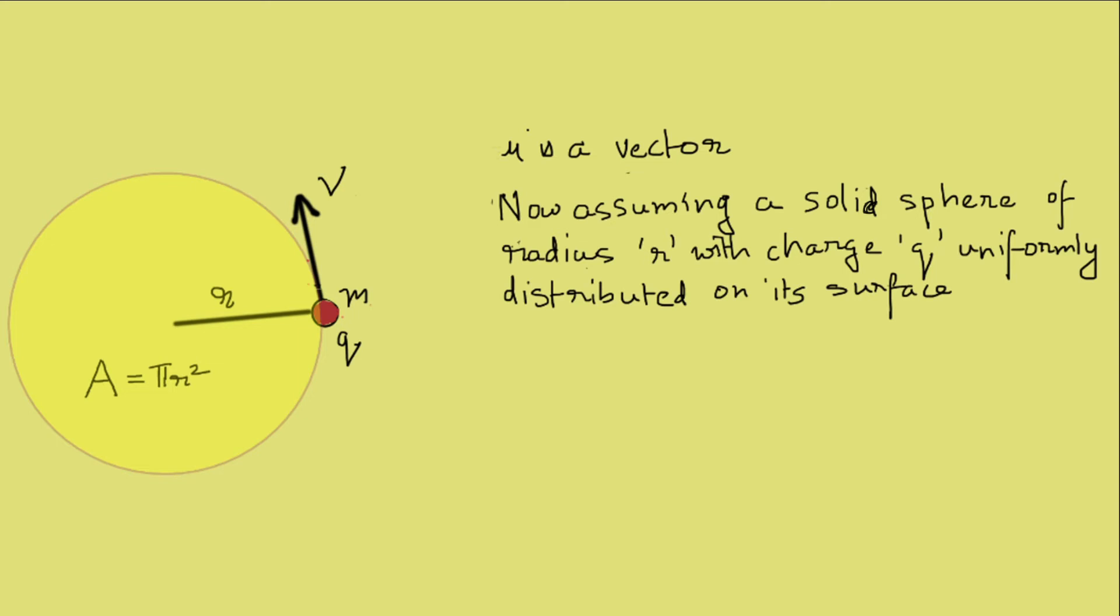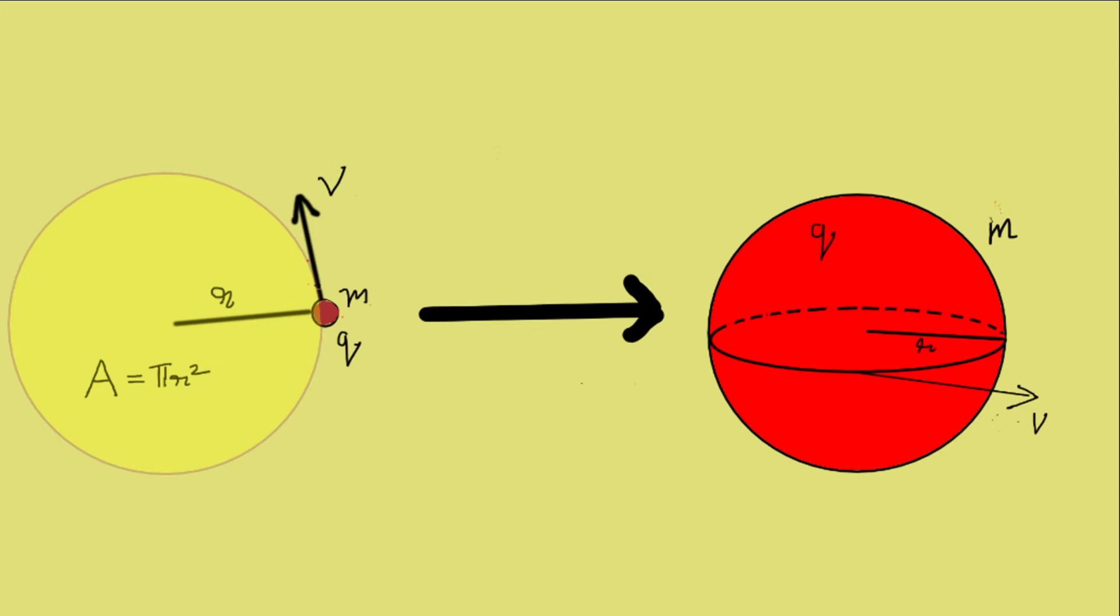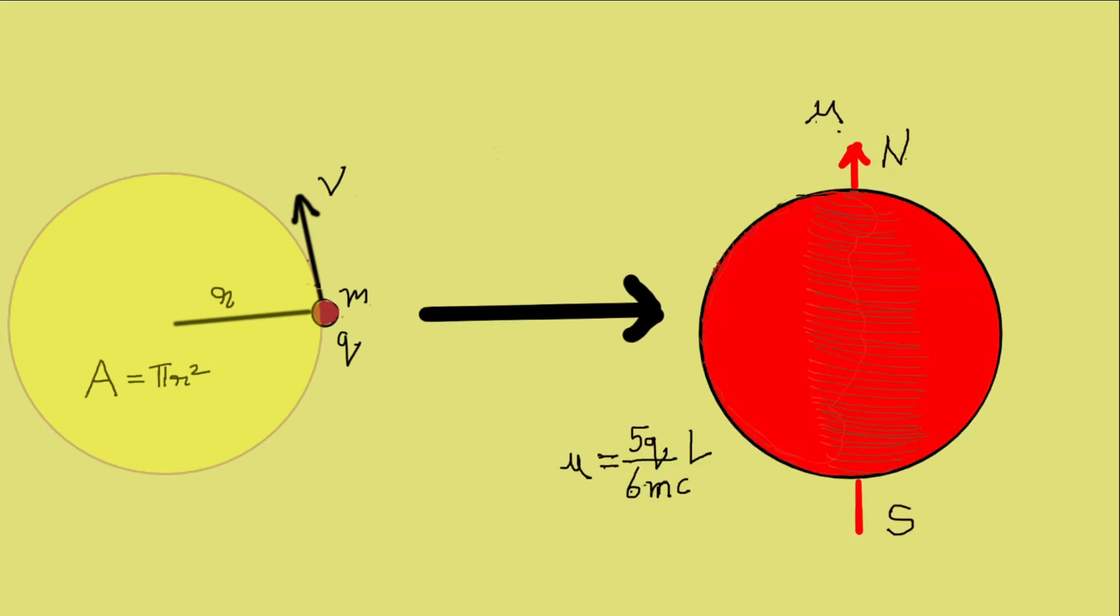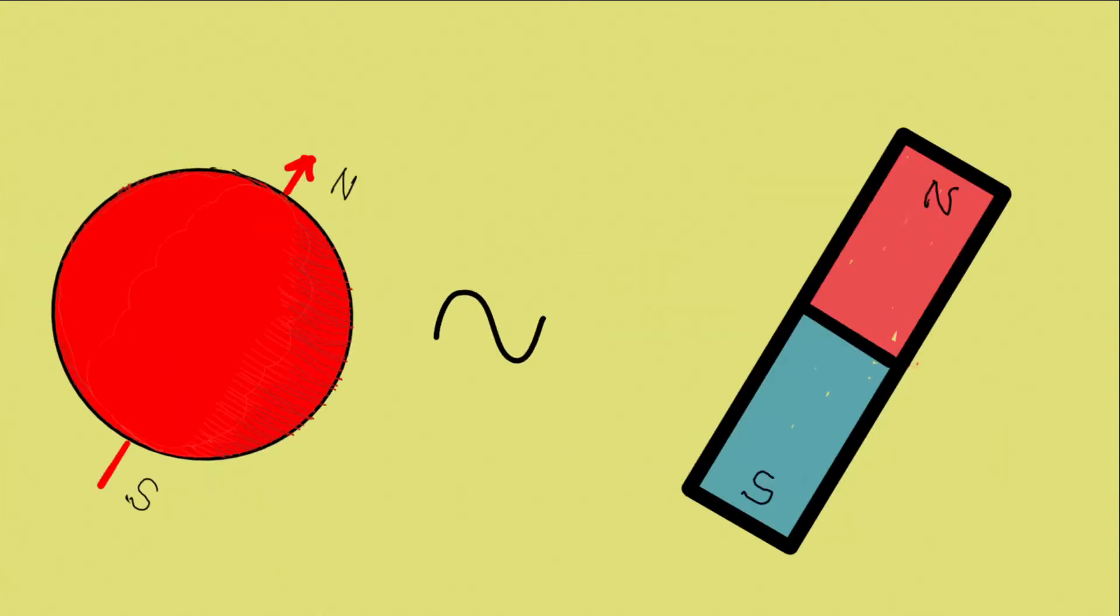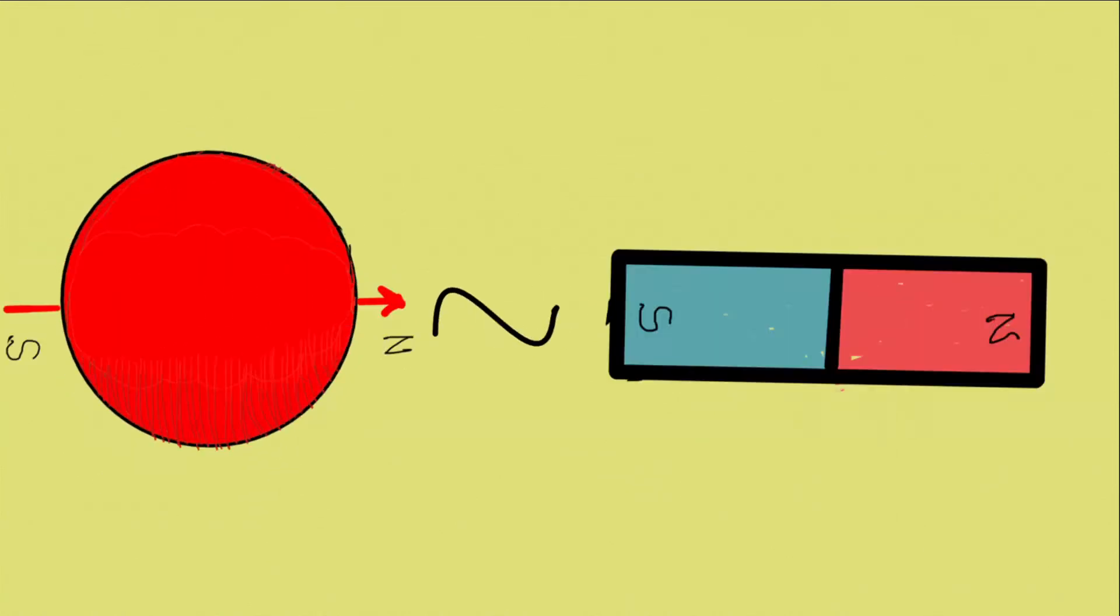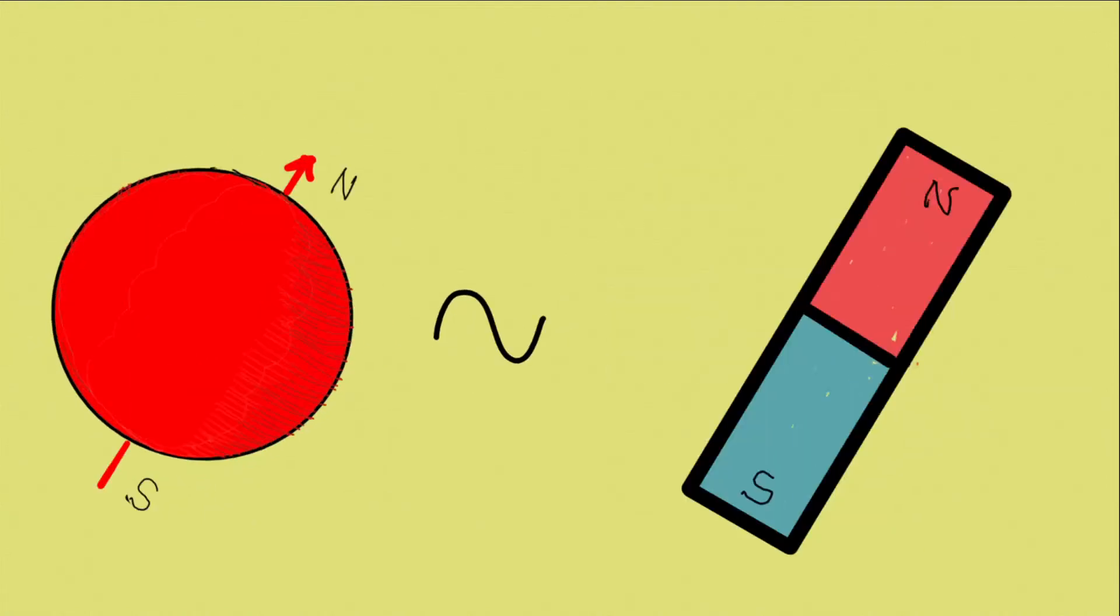If we reorganize the charge and mass distributions we can obtain different constants of proportionality. For instance, if we assume a solid sphere of mass m and radius r with charge q uniformly distributed over its surface and give it a spin with velocity v on its axis, we get a proportionality constant of 5q by 6mc. We can replace the spinning sphere with a magnetic dipole, and depending on the axis of the spin, the magnet also orients itself accordingly.